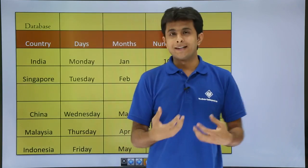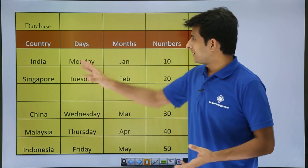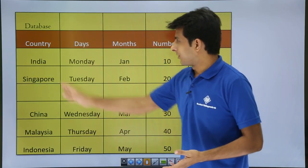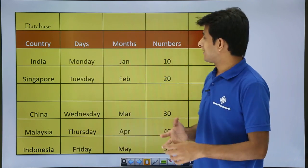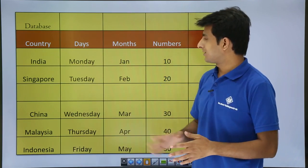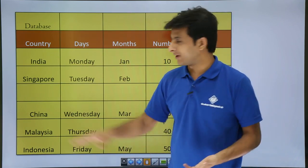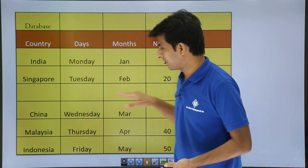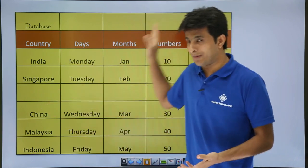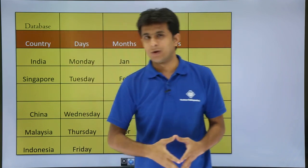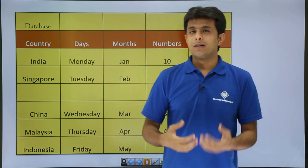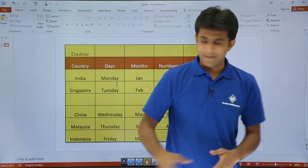I have created a database here with different columns given as country, days, months and numbers. I have purposely kept a blank row and a blank column, and the database written in just one cell. Now let us see how we can work with that.